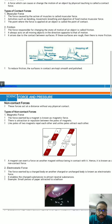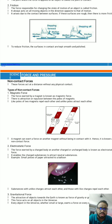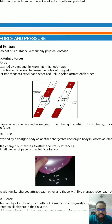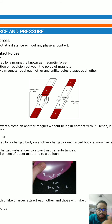In non-contact forces, magnetic force does not require physical contact. One magnet can exert force on another magnet without touching it. As you can see in the picture, forces are applied between two magnets. If opposite poles are arranged — north and south — they attract each other, and if like poles are arranged, they repel each other.